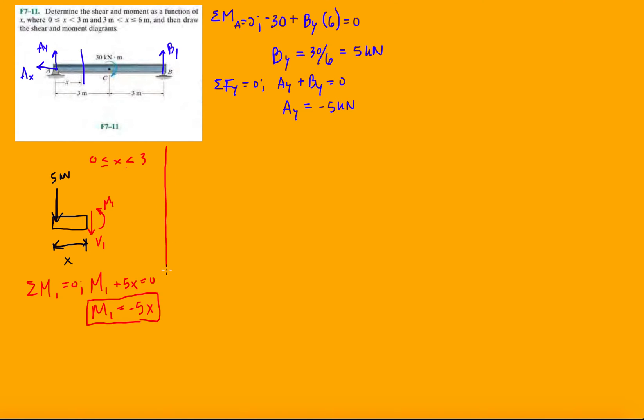I'm going to split it up like this. And then forces in the y, so we have minus 5 minus V1 equals zero, and then we have V1 is equal to minus 5 kilonewtons. Again, constant between 0 and 3, and this moment function varies linearly between 0 and 3.